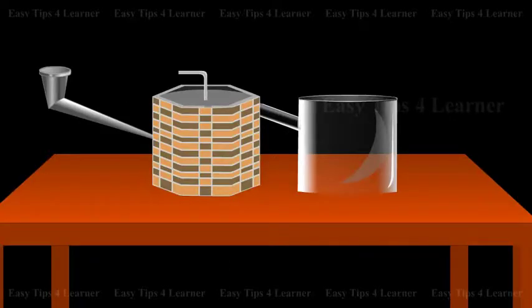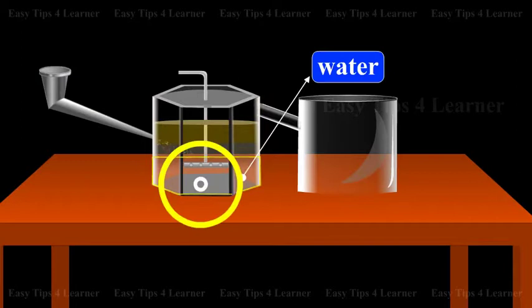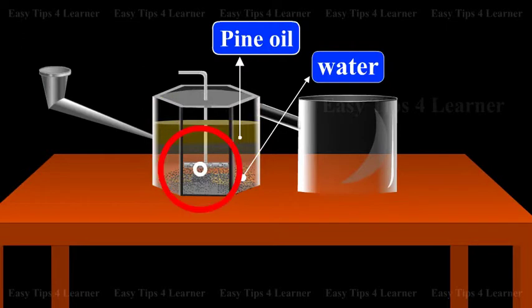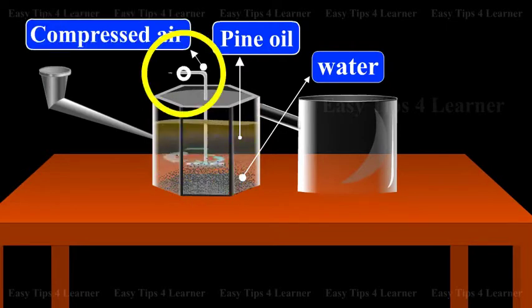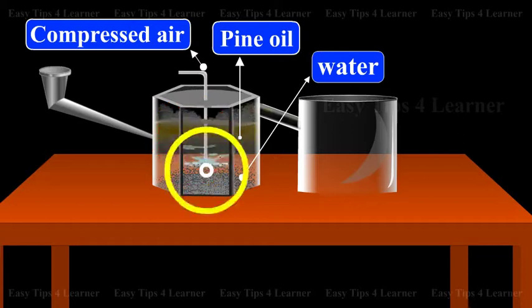In this process, the powdered ore is mixed with water and a little pine oil, that is a frothing agent, and the whole mixture is then stirred vigorously by blowing compressed air. The oil forms a foam or froth with the air.